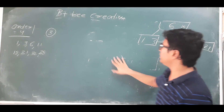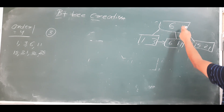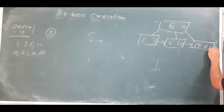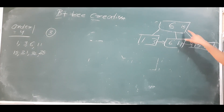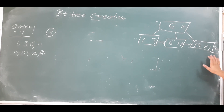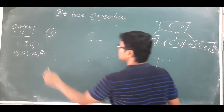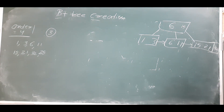Now I want to insert 32. Where will 32 come? 32 is greater than 15, greater than 21, so 32 will come in the rightmost leaf node. It does not create any overflow problem, so we can proceed.